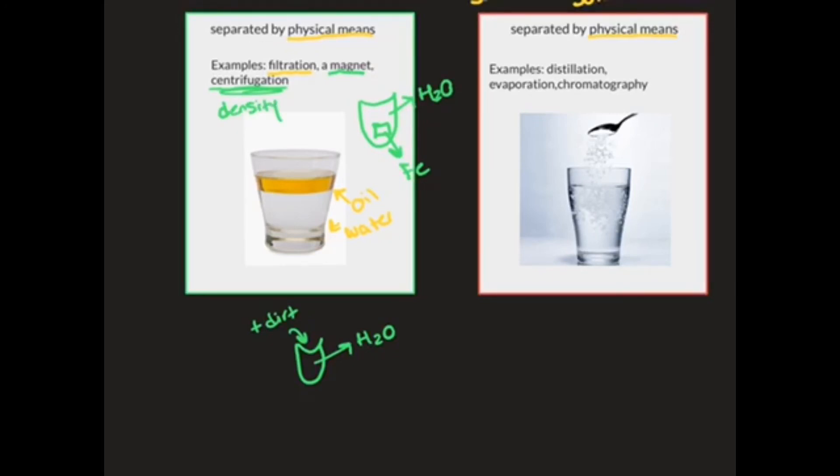The homogeneous solution can be separated by evaporation. If you let this solution sit, the water will eventually evaporate leaving the salt at the bottom. So if this salt was sodium chloride, the sodium chloride would be as a solid at the bottom.